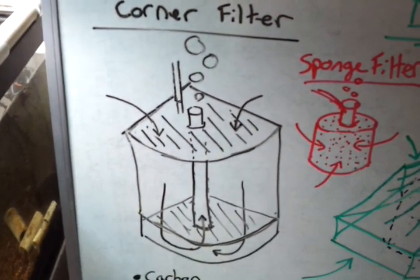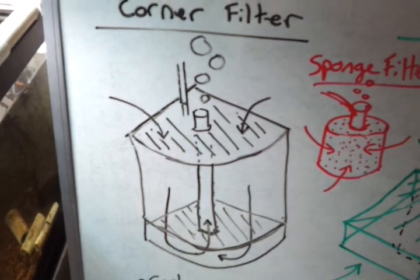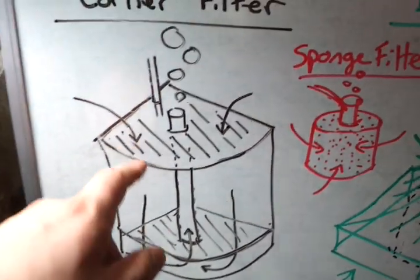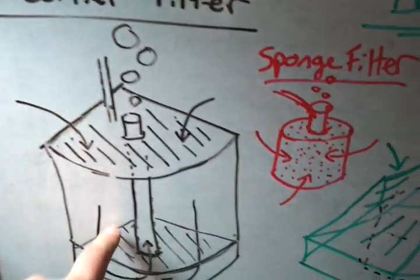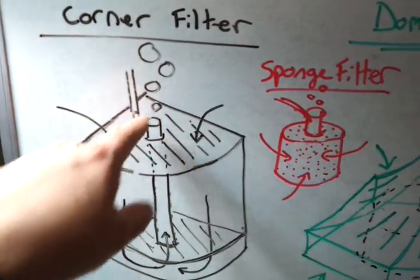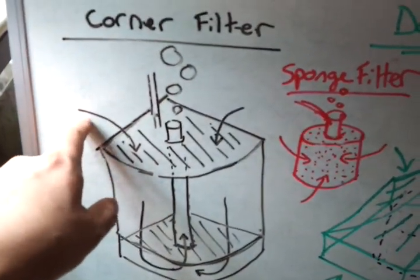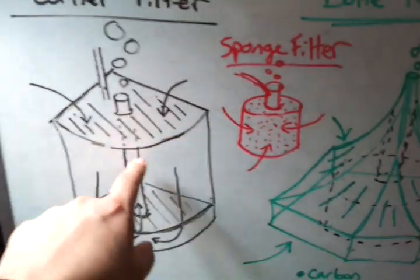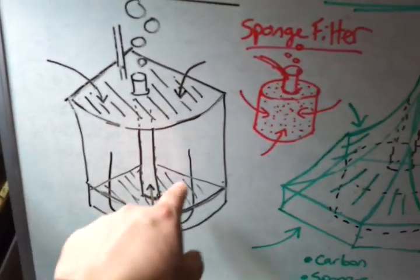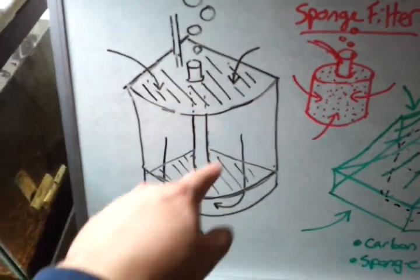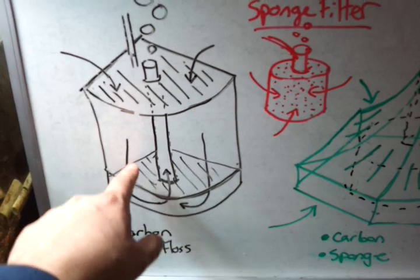And what it does is it sits in the corner of your tank, you attach an airline hose to it, and your pump pumps air down this hose and up a central channel. And what that does is it forces water to be drawn through the top, through this large chamber that you can fill with whatever you want, activated carbon, filter floss, whatever you want to use.